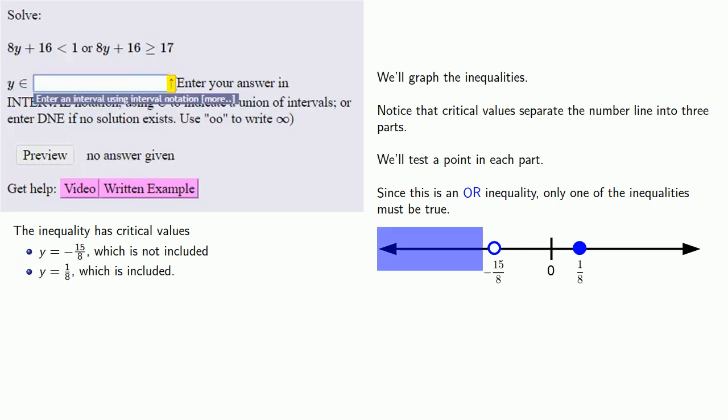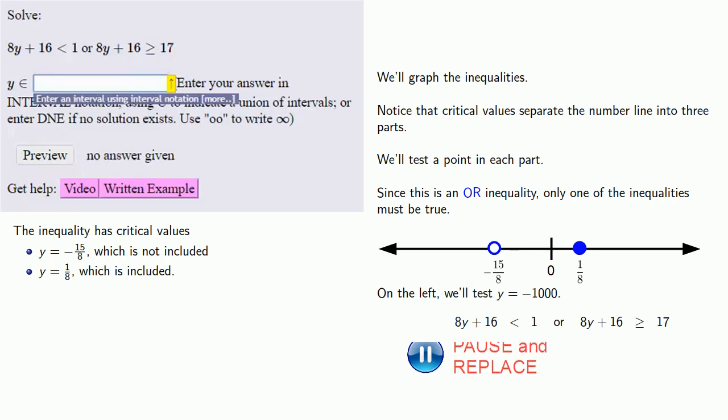On the left, we'll test y equals, well, let's go big, minus 1000. The question is: is the inequality 8y plus 16 less than 1 or 8y plus 16 greater than or equal to 17 true for y equals minus 1000? We'll replace y with minus 1000. The left-hand side is going to be a pretty big negative number, which will definitely be less than 1, and so the left interval is included.